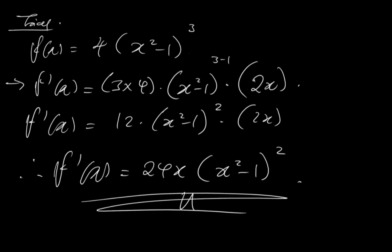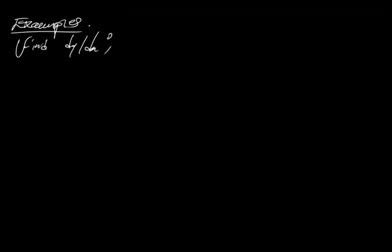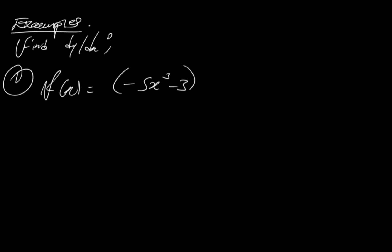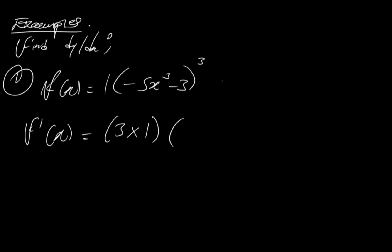Alright, let's understand the chain rule with a few examples. Say we've been told to find dy over dx. Question 1: f of x is equal to (minus 5x cubed minus 3) to the power of 3. If you apply the chain rule here, f prime of x is equal to n times c, of which n is simply 3 and c is 1. Times the something, which is (minus 5x cubed minus 3), the power is reduced by 1, times the derivative of something, which will be minus 15x squared.